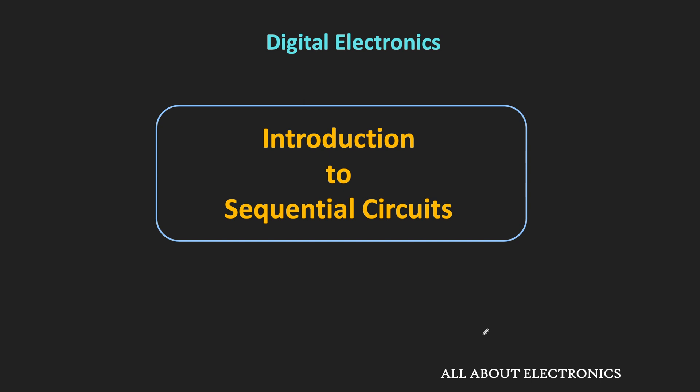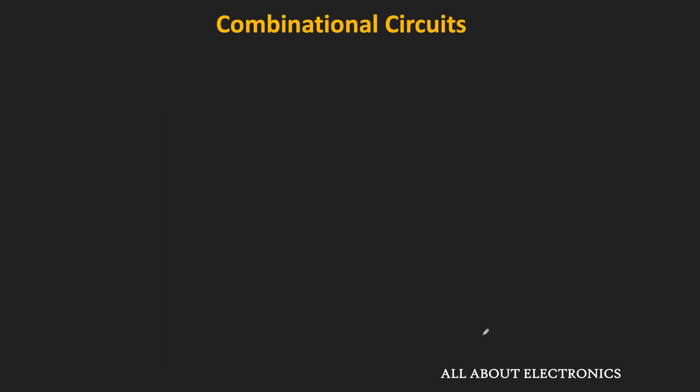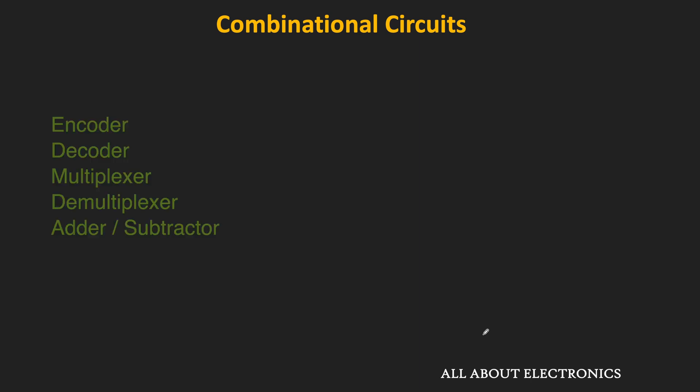If you see any digital circuit used in our day-to-day life, it consists of both combinational as well as sequential circuits. Let us understand the basics of sequential circuits and how they differ from combinational circuits. All the circuits we have discussed so far — like the encoder, decoder, adder, and subtractor — were combinational circuits.